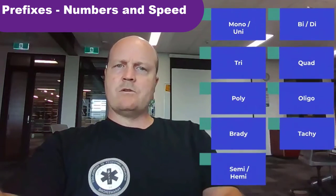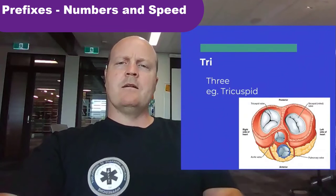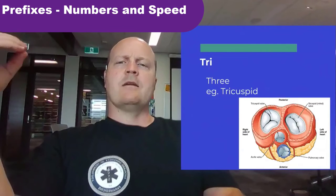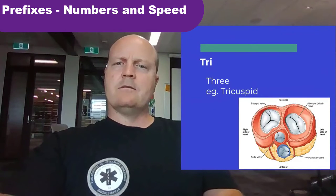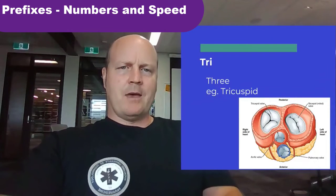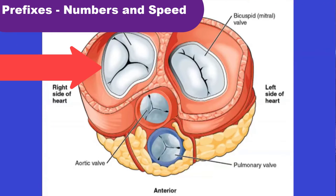That brings us to tri, which means three — like riding a tricycle. Looking at the heart again, on the other side from the bicuspid valve we've got a tricuspid valve, which has three components to it.